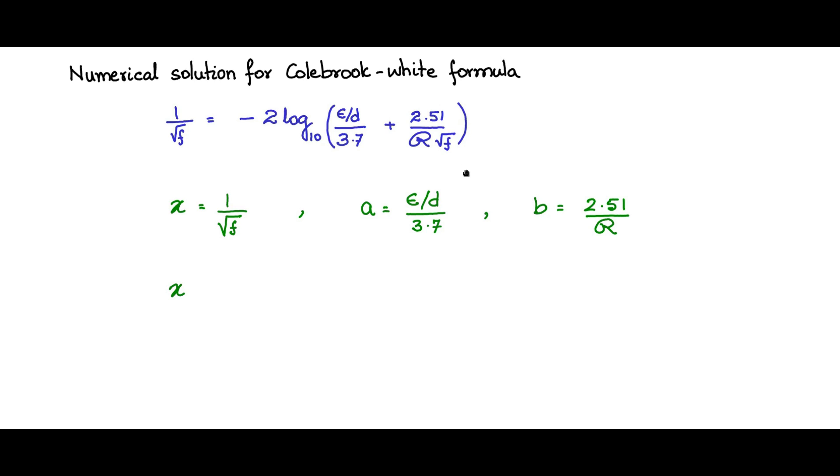Now this Colebrook-White formula becomes simple to read: x is equal to minus 2 log to base 10 a plus b x. This is the equation for which we need to find the root and find the value of x.